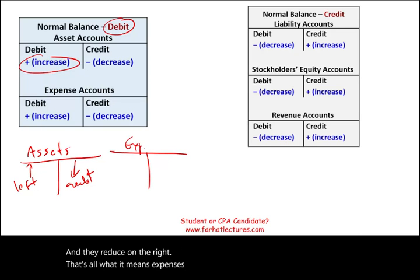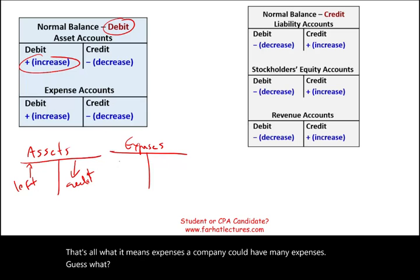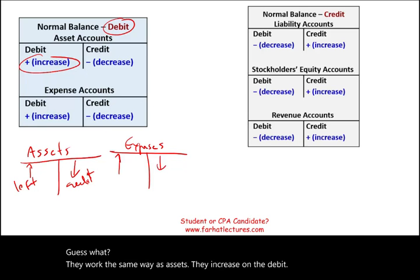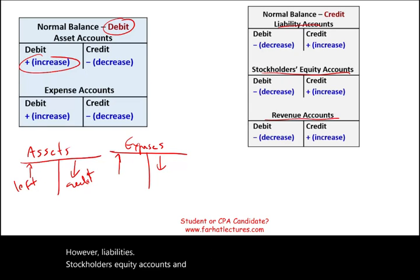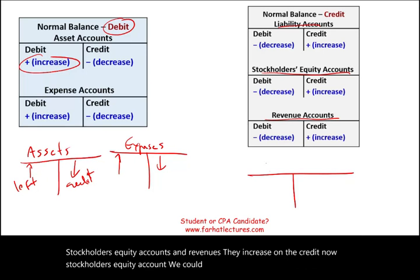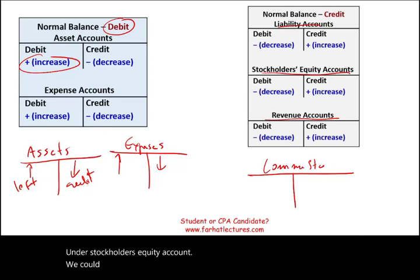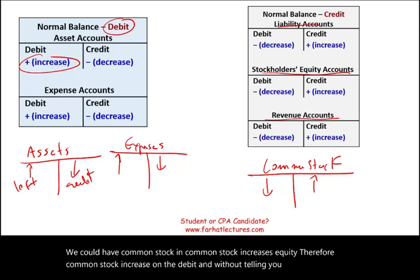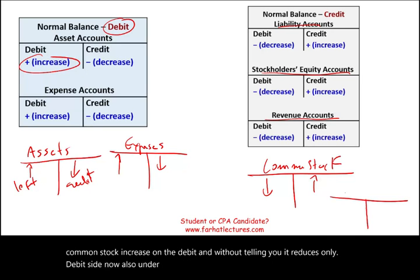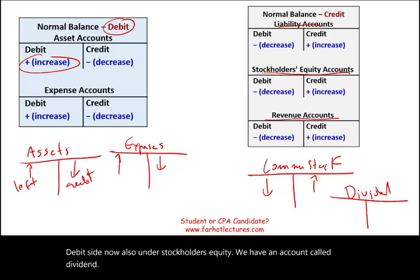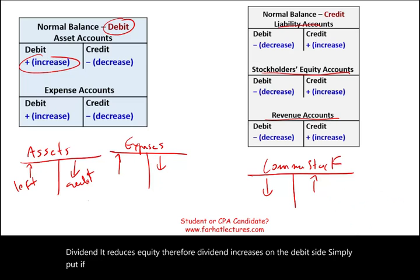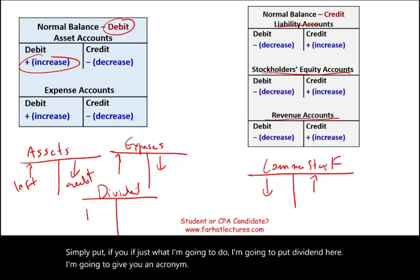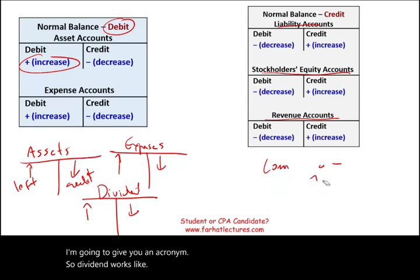Expenses work the same way as assets — they increase on the debit side. However, liabilities, stockholders' equity accounts, and revenues increase on the credit side. Under stockholders' equity, common stock increases equity and therefore increases on the credit side. Dividends reduce equity, so dividends increase on the debit side — they work like assets and expenses. The acronym to remember is DEA: Dividends, Expenses, Assets — these all increase on the debit side.